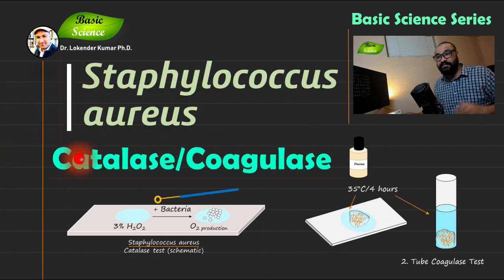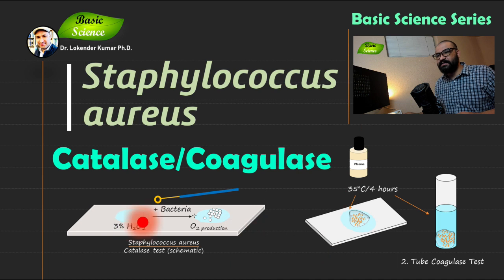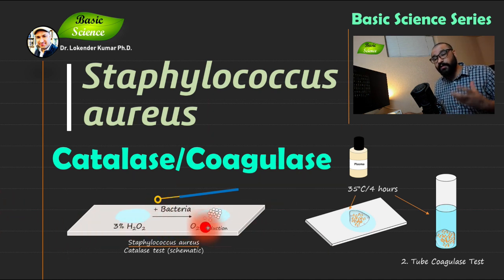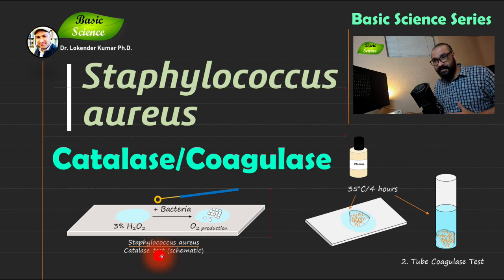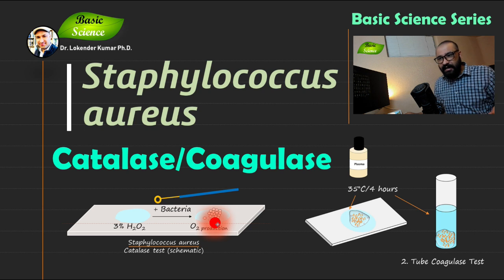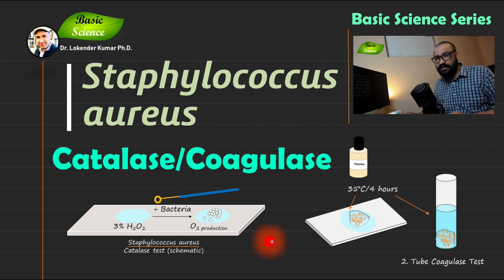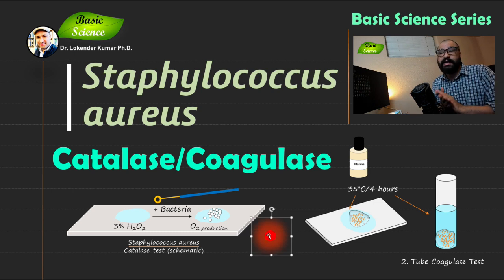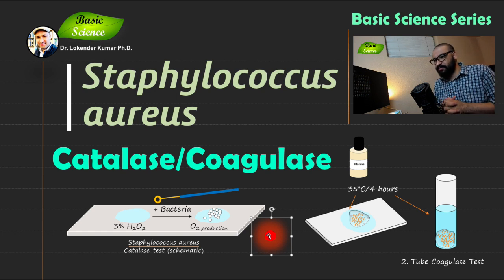Let's move to the final slide to summarize. Using a loopful of bacterial culture, if you see bubble formation that indicates a catalase positive reaction — Staphylococcus aureus will give a catalase positive test. These are the two important tests you can perform in a routine microbiological lab to identify bacteria. I hope this video presentation helped you understand the steps required to perform these tests and the mechanism behind the reactions.